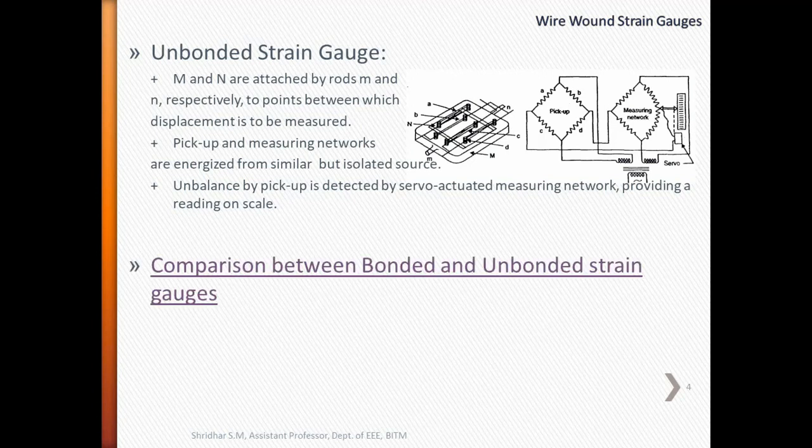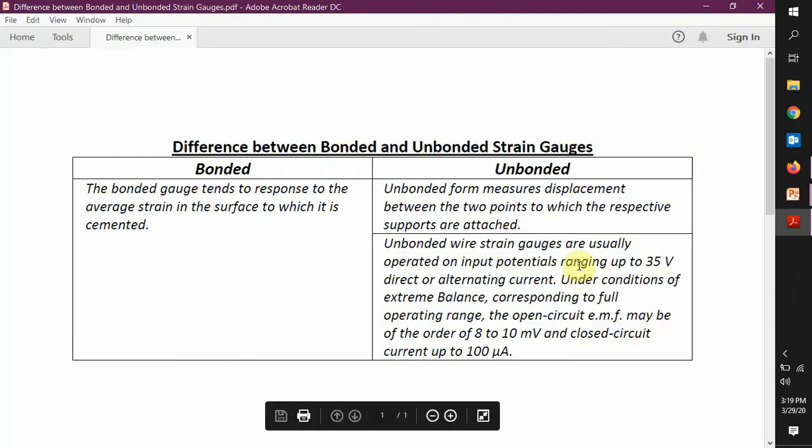The bonded strain gauge tends to respond to the average strain in the surface to which it is cemented. We have seen the four different forms of commonly used bonded strain gauges, which depend on the physical structure of the bonded strain gauge.